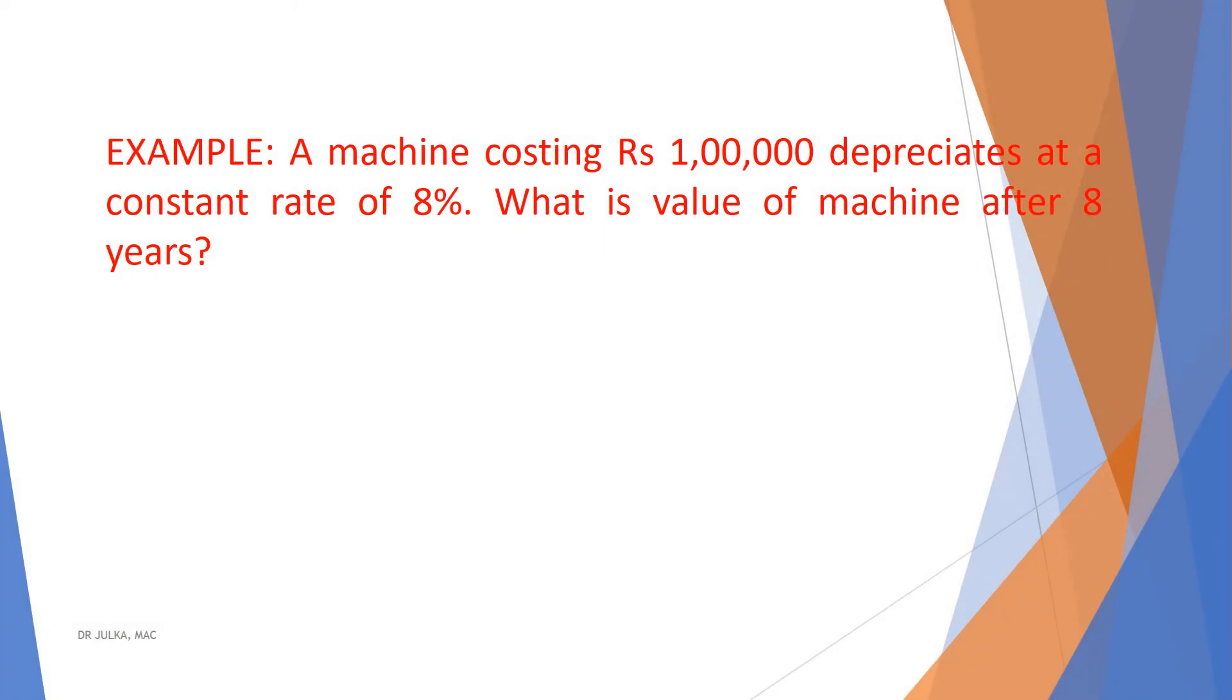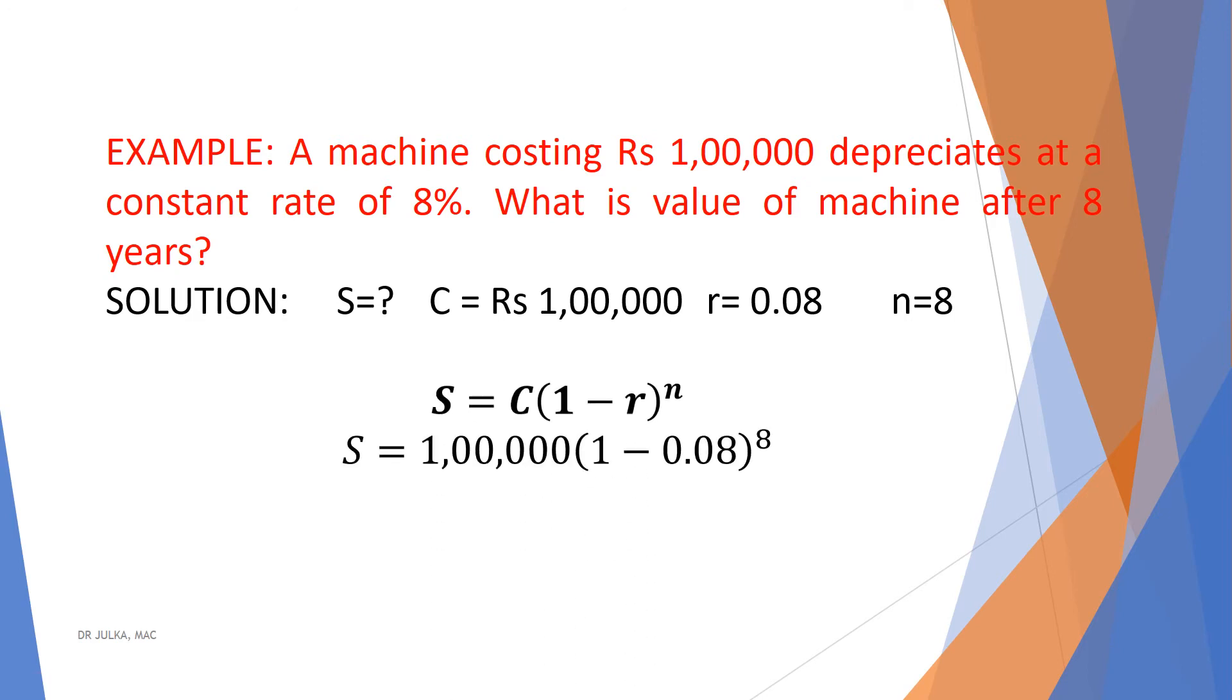One example on diminishing balance method or written down value method. A machine costing 1 lakh rupees depreciates at a constant rate of 8%. What is the value of machine after 8 years? In this example, C is given as 1 lakh rupees, rate of depreciation 8% which implies 0.08 and N equals 8 and we want to calculate S. We know that S equals C multiplied by 1 minus R whole raised to the power N. Put C equals 1 lakh, R equals 0.08 and N equals 8 and after calculation we will get S equals 51,321.89.